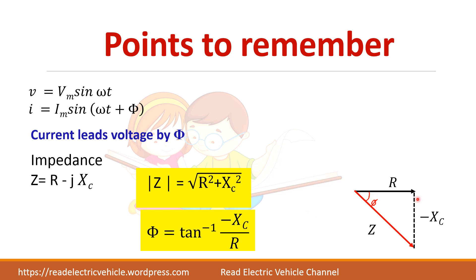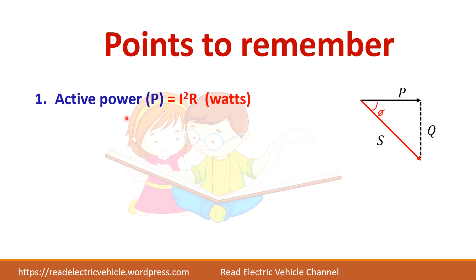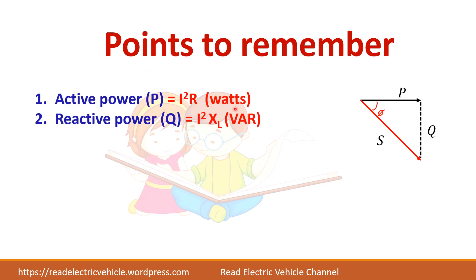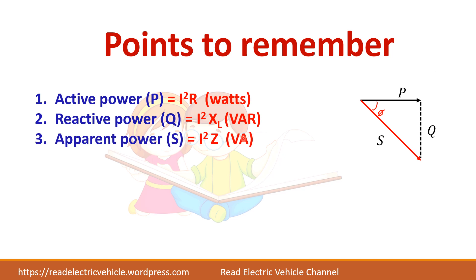This is the impedance triangle, and this is the power triangle. The active power is I squared R watts, the reactive power is I squared Xc volt-ampere reactive, and the apparent power is I squared Z volt-ampere.